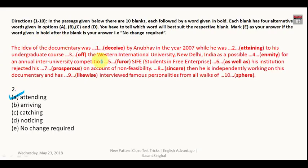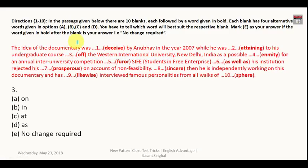He was attending the undergraduate course at Western International University. This particular university is working as a specific point or location, and to convey the meaning of a point or location we always use the preposition 'at'. So the correct answer is 'at' — at the Western International University, New Delhi, India.